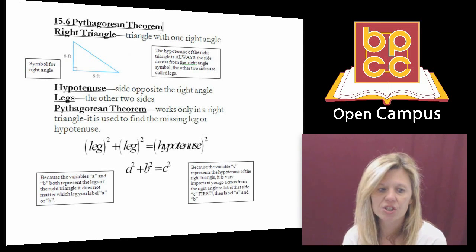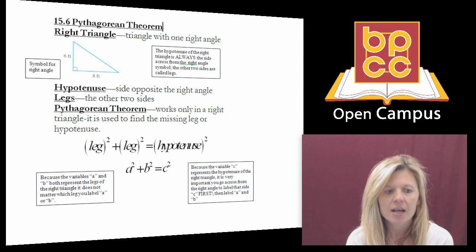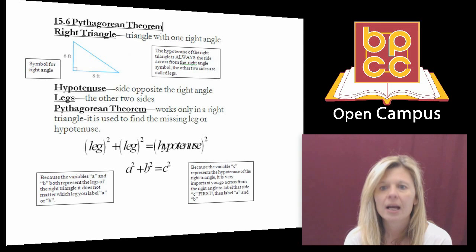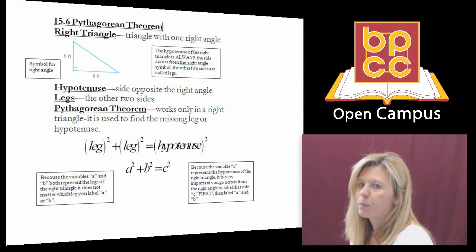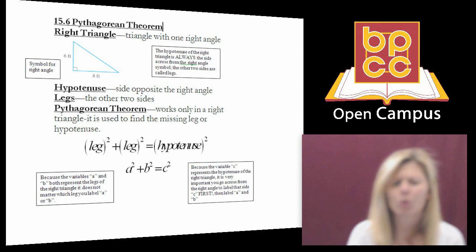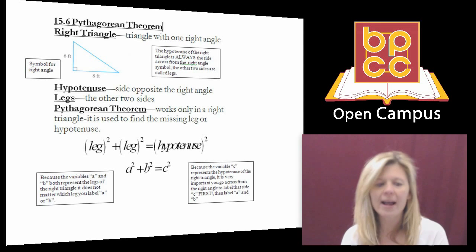And what the Greek mathematician Pythagoras found out is if you take the leg of the triangle and square it, and you take the other leg of the triangle and square it, and you add them up, that will equal the same thing as the hypotenuse squared. So Pythagorean's rule or theorem is leg squared plus leg squared equals hypotenuse squared. Well that's a lot.